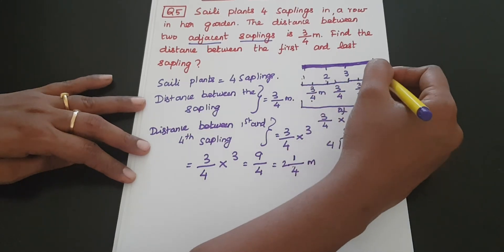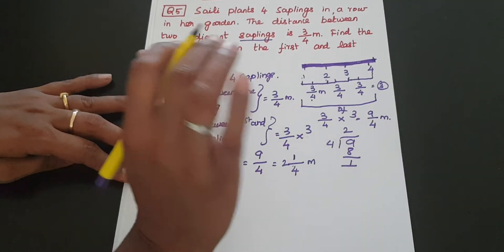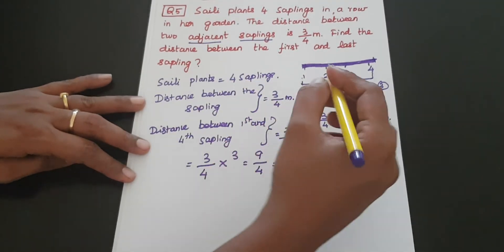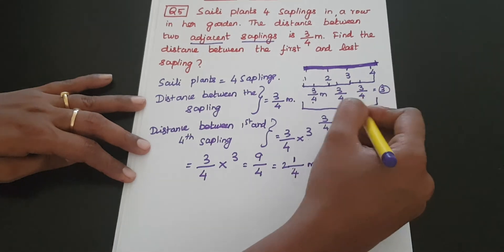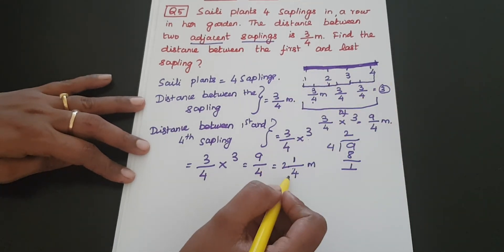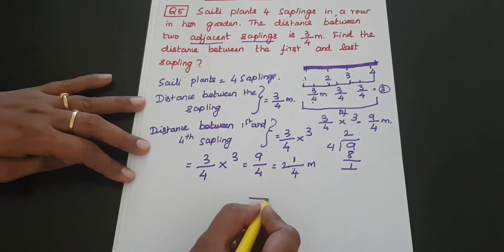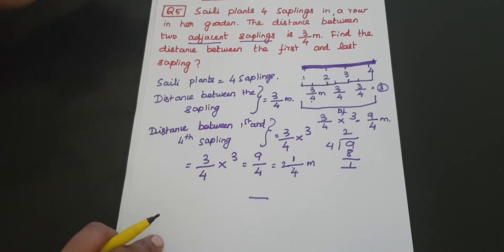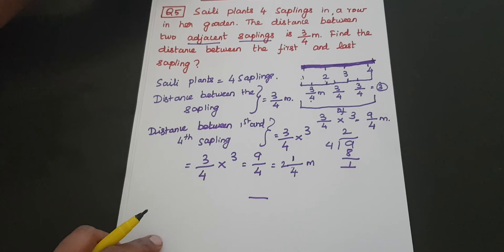So with 4 plants there are 3 gaps, and the distance is 3/4 meter each time, giving us the total. That concludes question number 5. Moving on to question number 6.